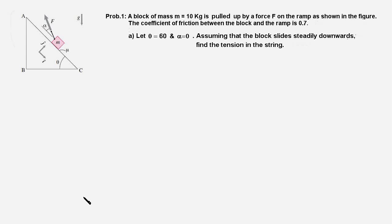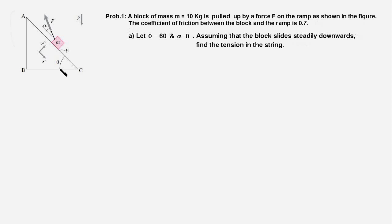In the previous videos we looked at friction between a block and a horizontal surface. In this video we are going to look at the force of friction acting on a block placed on an inclined plane. The block is of mass 10 kilograms and the coefficient of friction between the block and the plane is 0.7. In part A of the problem, the angle of the incline is 60 degrees and we have to find the magnitude of the force F when the block slides down steadily.